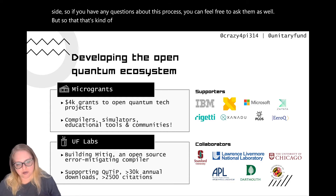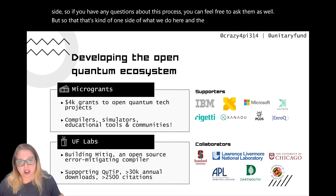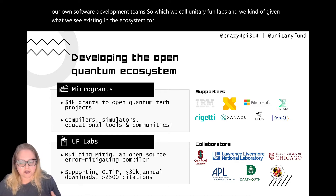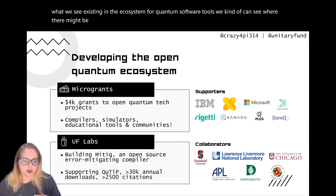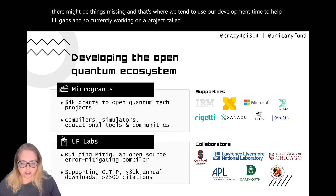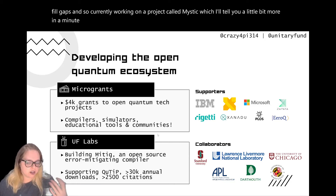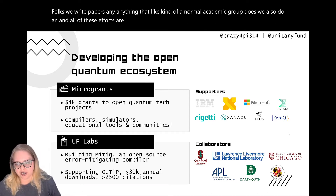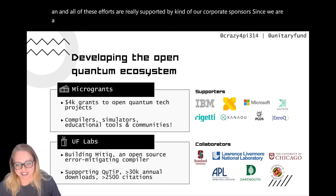The other side of what we do is we have our own software development teams, which we call Unitary Fund Labs. Given what we see existing in the ecosystem for quantum software tools, we can identify where things are missing, and that's where we use our development time to fill gaps. Currently we're working on a project called MITIC. This also allows us to collaborate with academic folks — we write papers, anything that a normal academic group does, we also do. All of these efforts are supported by our corporate sponsors.